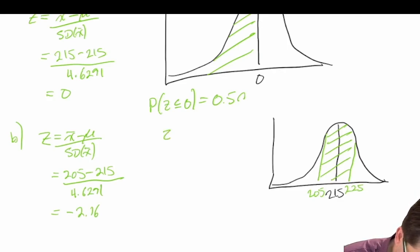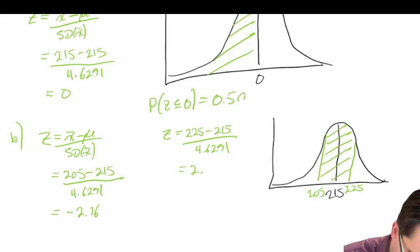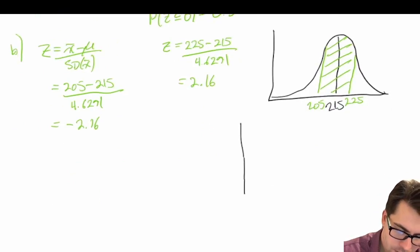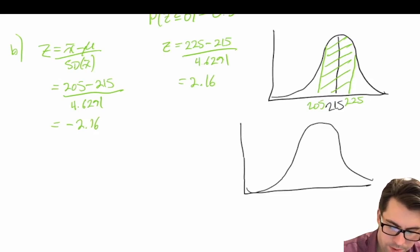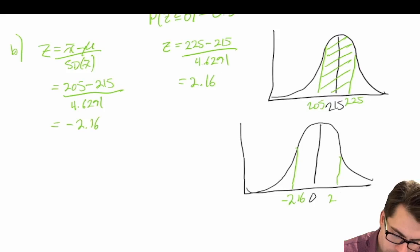We calculate the second z-score: z equals 225 minus 215 divided by 4.6291, which equals 2.16. On the standard normal curve centered around 0, we have z = negative 2.16 and z = positive 2.16, and we're asked what is the probability of falling between these two values.